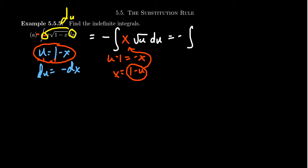And so when you do that, you end up with negative the integral. You're going to get a (1-u) times u to the one half, aka the square root of u du. And so does this function right here put us in a simpler situation than we started with?